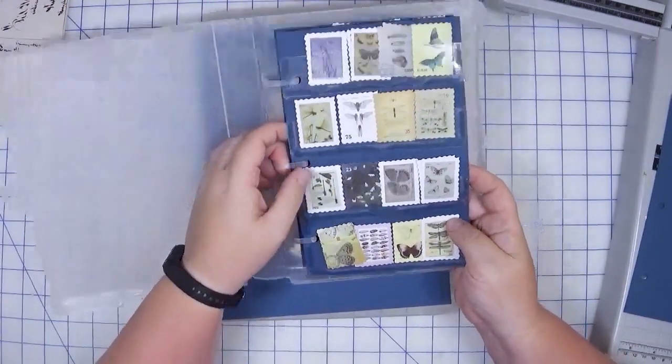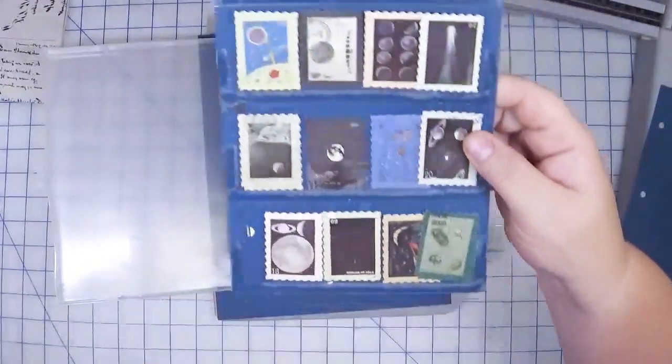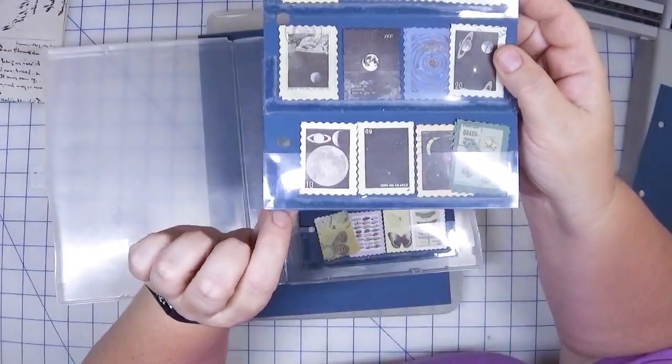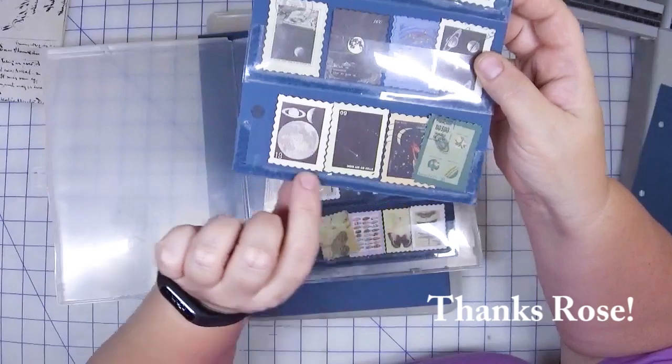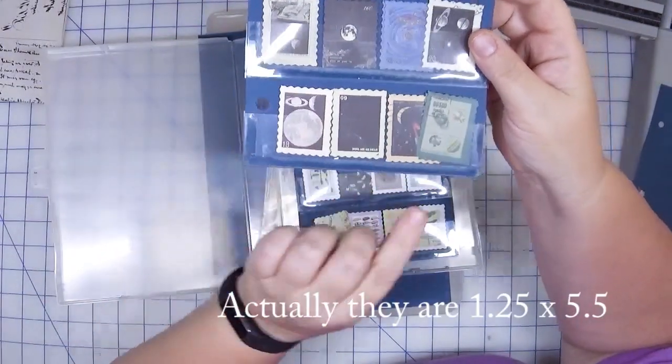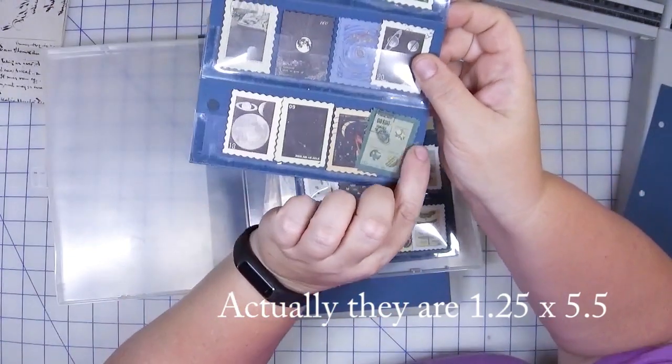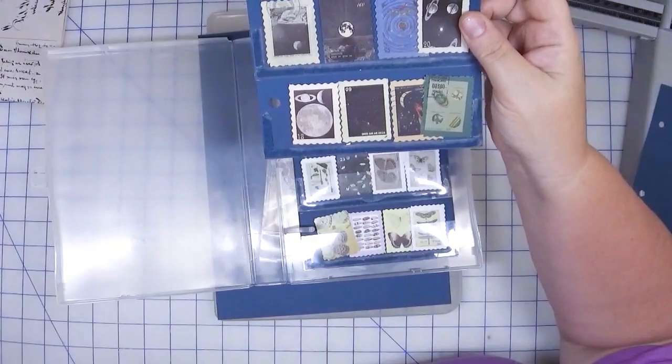Basically what I did was I took some eight and a half by eleven paper, cut it in half, and then I took some acetate. A friend of mine very generously sent me a package of transparencies and I trimmed these down to one and a half by five and a half.